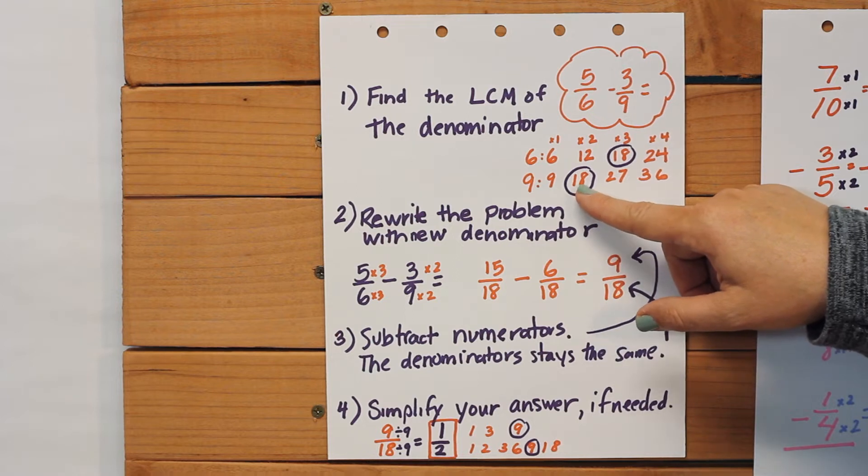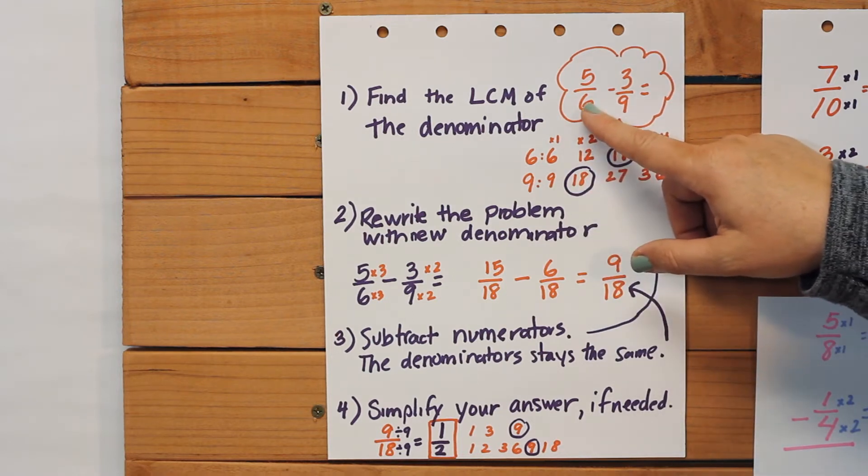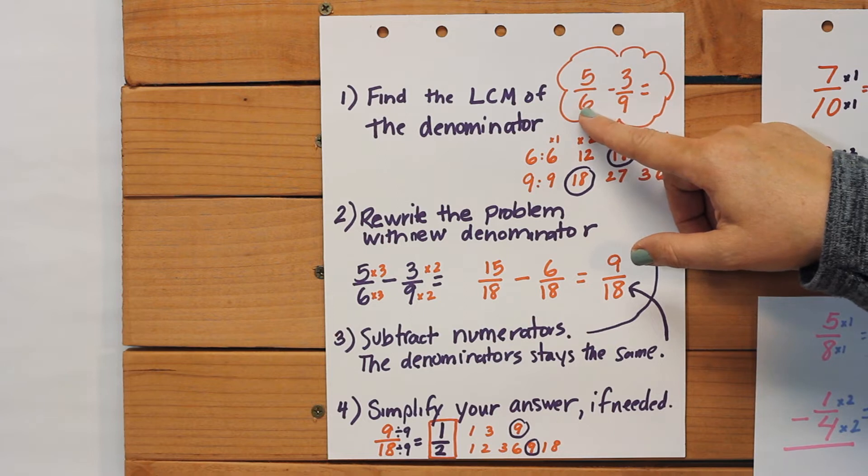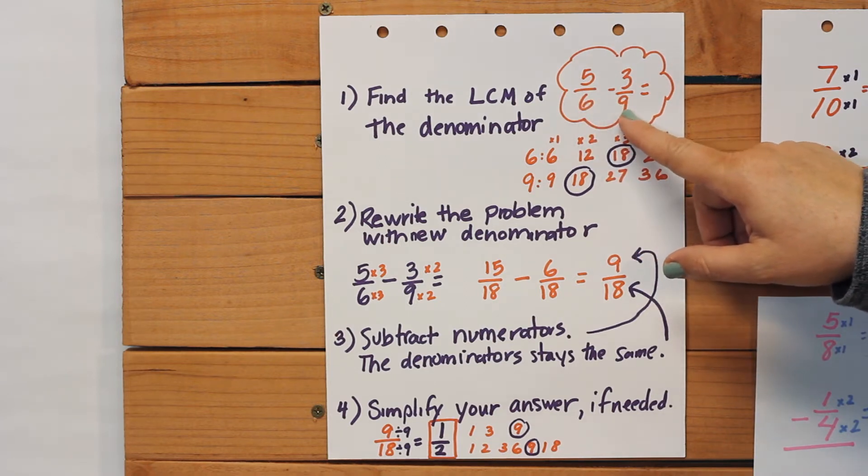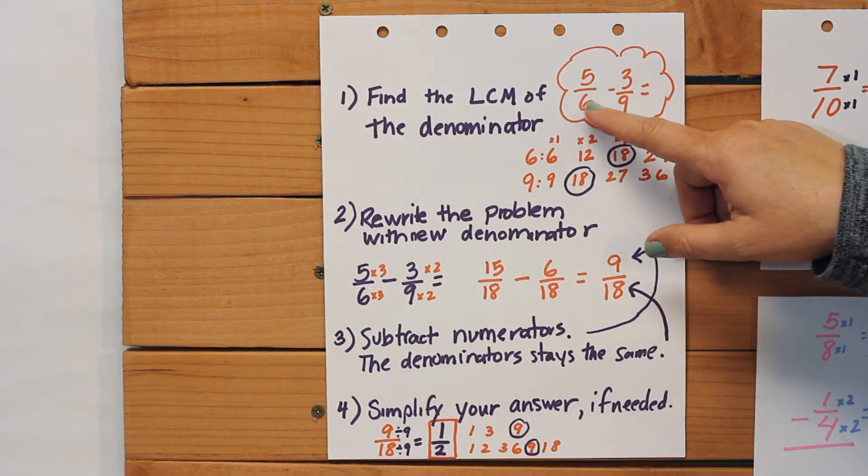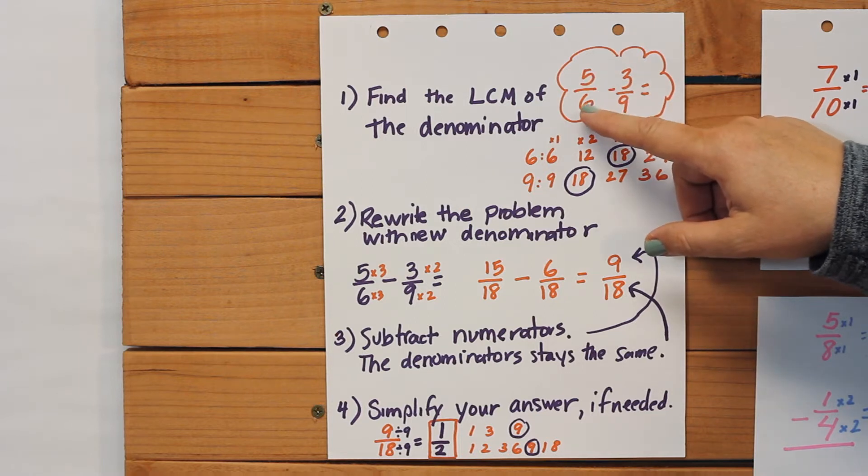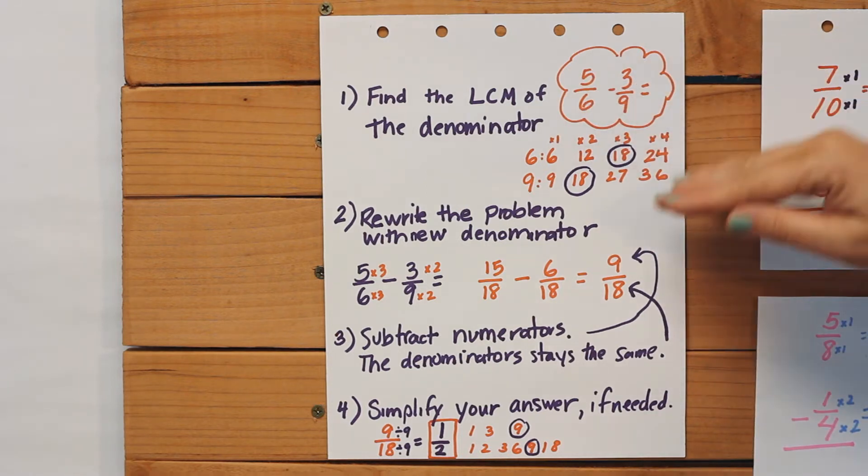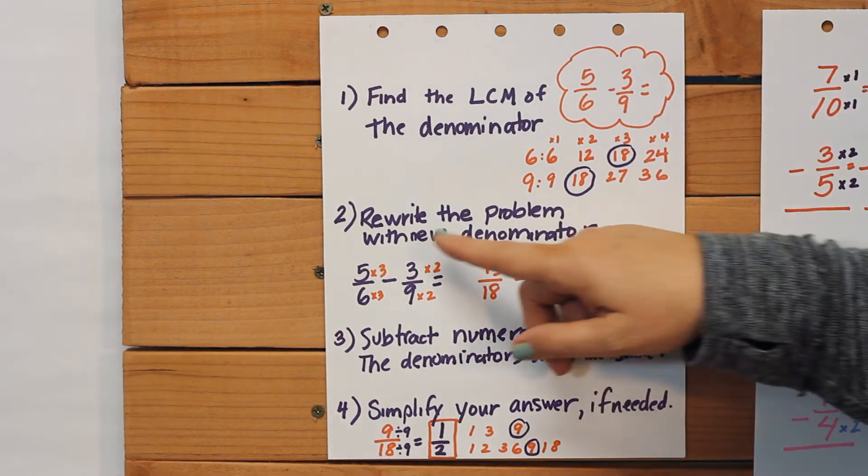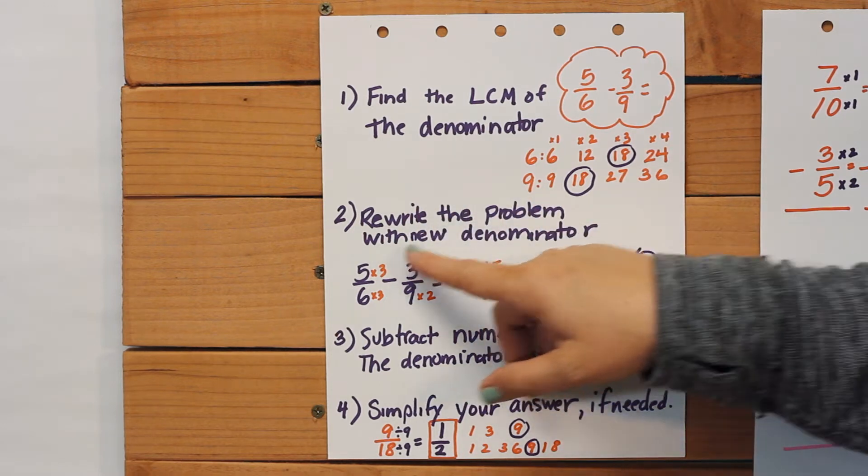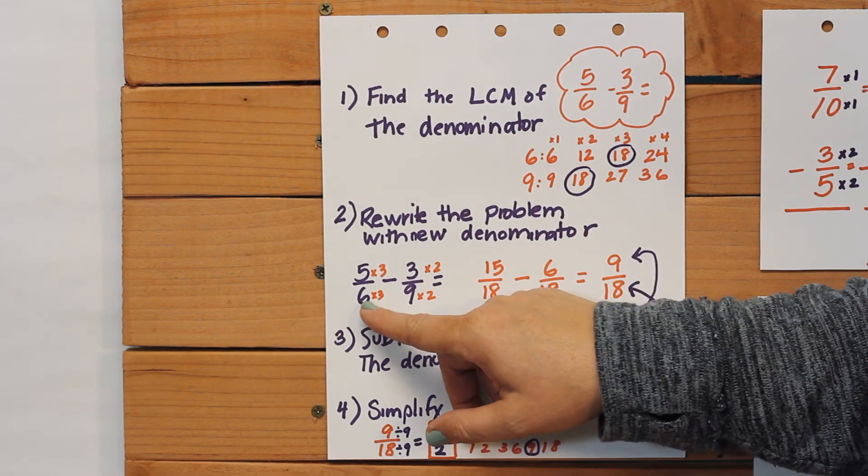So what I'm going to do now is I need to determine how many times six goes into eighteen and how many times nine goes into eighteen, and then I'm going to multiply the numerator and the denominator by those numbers. So that leads us to number two, where we're going to rewrite the problem with our new denominator.